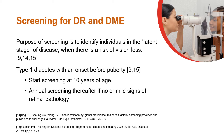The purpose of screening is to identify individuals in the latent stage of disease when there is a risk of vision loss. In patients with type 1 diabetes with an onset before puberty, start screening at 10 years of age. Thereafter, annual screening should be done if no or mild signs of retinal pathology are observed.